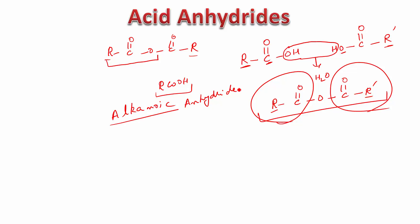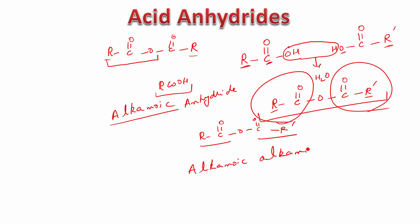If R and R' are different, you write both alka-noic names one after the other: one alka-noic, space, the other alka-noic, space, then anhydride. The order of the two alka-noic names depends on alphabetical order. This is the basic naming system for acid anhydrides in the IUPAC system.